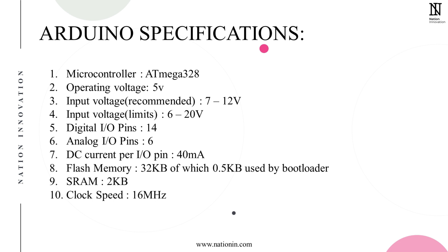Now let's look at the specifications of the Arduino Uno. It uses the ATmega328P microcontroller, designed by Atmel. The operating voltage is 5V, but the recommended input voltage is 7 to 12V. The maximum voltage it can handle ranges from 6 to 20V — beyond that, the Arduino can get damaged. There are 14 digital input/output pins and 6 analog pins, with a DC current rating of 40 milliamperes per pin.